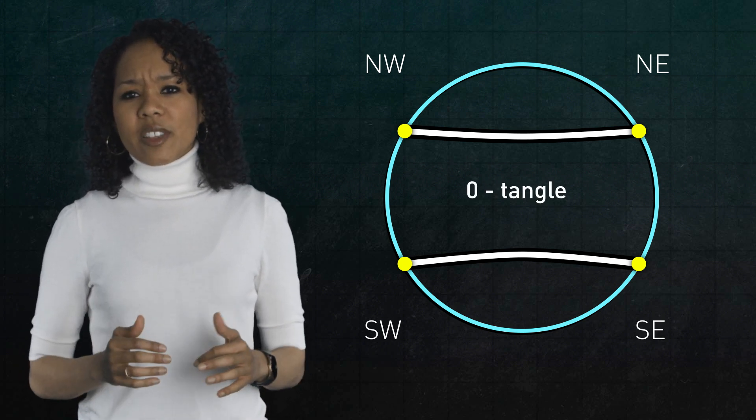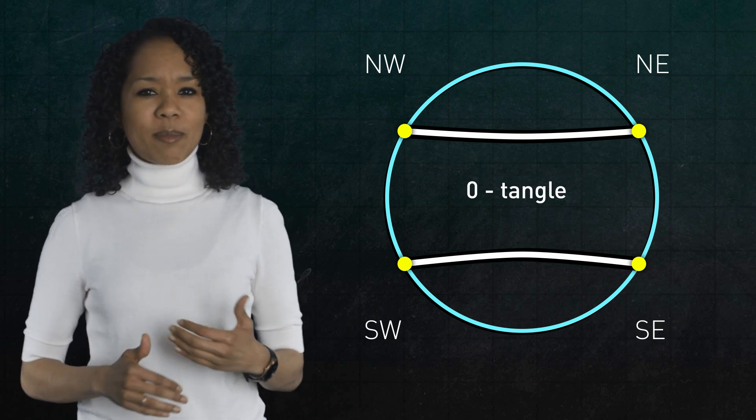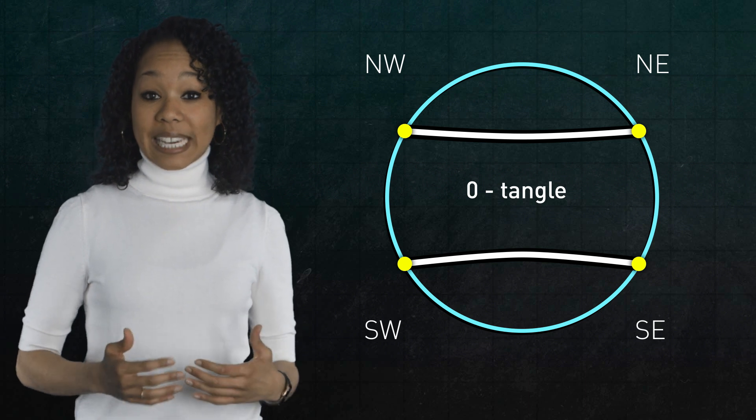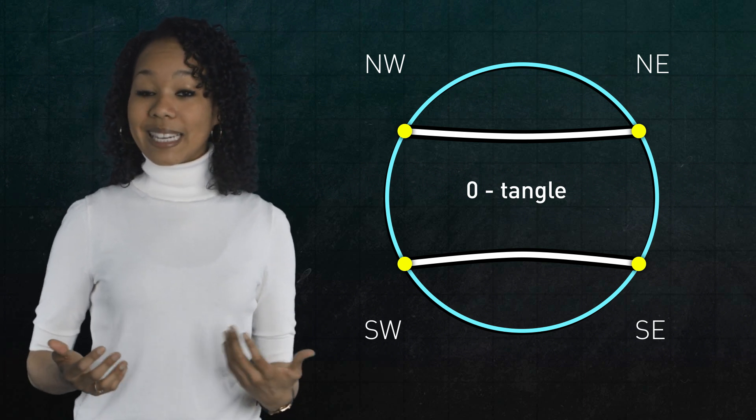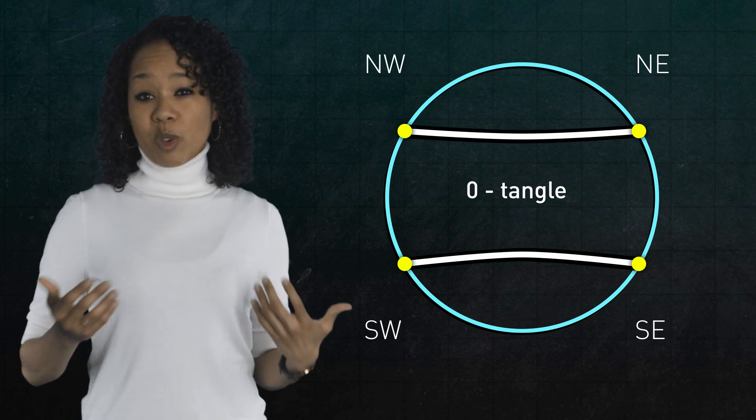Now, from here, there are two types of twists you can do, and any combination of these twists will tangle the strings. The result you get is called a rational tangle, because it corresponds to a rational number. We'll see how in a second. But what are the two moves?